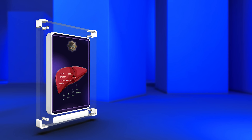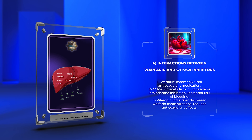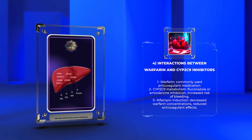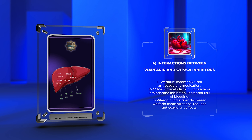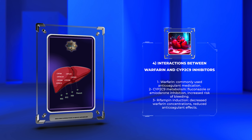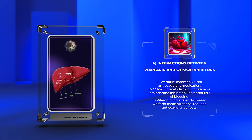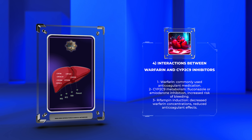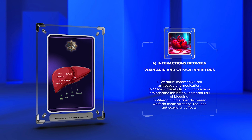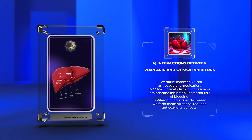Warfarin, a commonly used anticoagulant medication, is primarily metabolized by the CYP2C9 enzyme. Inhibition of CYP2C9 by certain medications, such as fluconazole or amiodarone, can lead to prolonged warfarin half-life and increased risk of bleeding. On the other hand, inducers like rifampin can enhance CYP2C9 activity, resulting in decreased warfarin concentrations and reduced anticoagulant effects. Detailed knowledge of these interactions is essential for determining appropriate warfarin dosing and monitoring.